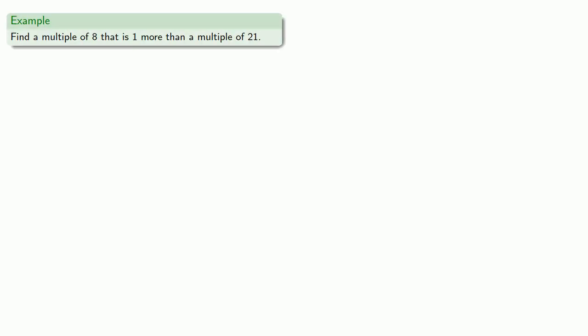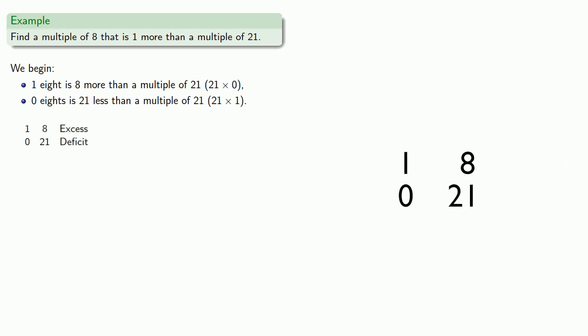So let's look for a multiple of 8 that's 1 more than a multiple of 21. So we begin by noting that 1 eight is 8 more than a multiple of 21, namely 21 times 0. And 0 eights is 21 less than a multiple of 21, namely 21 times 1. And so we'll set up our table showing this excess and deficit. Now since 21 is greater than 8, we'll repeatedly subtract 8 and keep track of how many times we've done that subtraction.